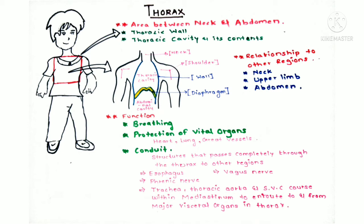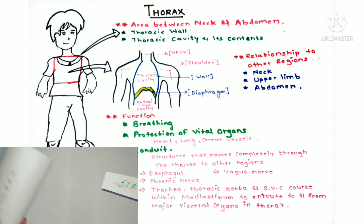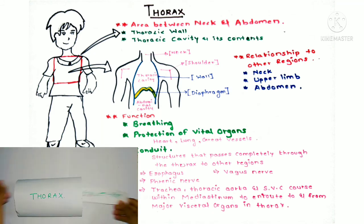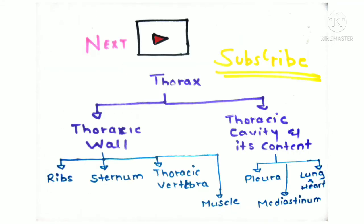The thorax also acts as a conduit for structures passing from one region to another through it. You can imagine the thorax as a tunnel — you enter from one end and come out the other end. These structures include the esophagus, vagus nerve, phrenic nerve, trachea, thoracic artery, and superior vena cava.